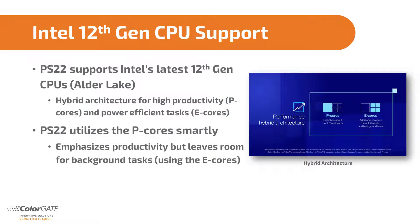Version 22 supports Generation 12 Intel CPUs. The so-called order-lag CPUs come with a hybrid structure with P-Cores for high productivity and E-Cores for efficiency. ColorGate Production Server makes clever use of this, allowing you to process print jobs faster.